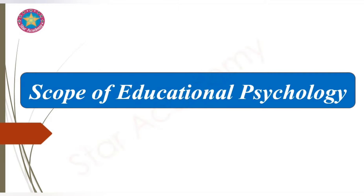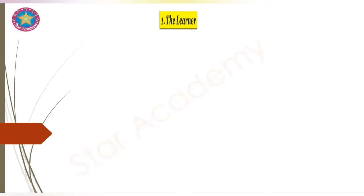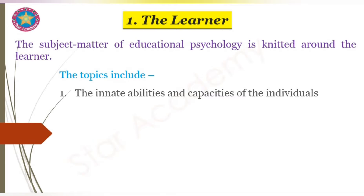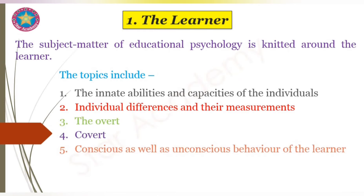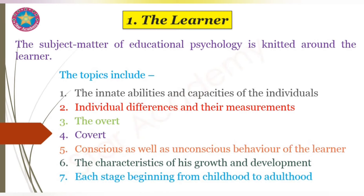The scope of educational psychology is ever-growing due to constant research in this field. Number one: the learner. The subject matter of educational psychology is united around the learner. Topics include the innate abilities and capacities of individuals, individual differences and their measurements, overt and covert behavior, conscious as well as unconscious behavior of the learner, the characteristics of growth and development, and each stage from childhood to adulthood.